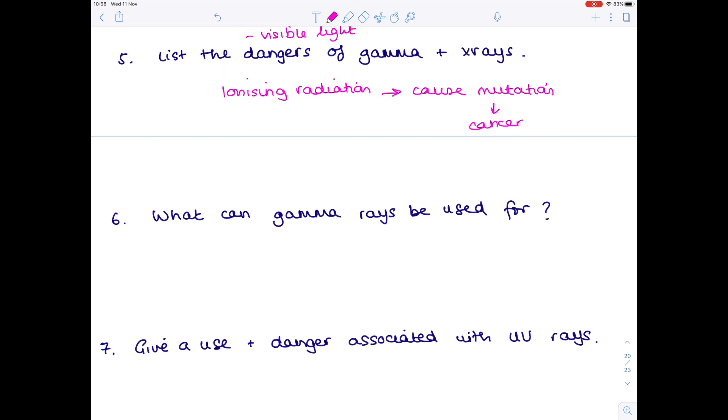What can gamma rays be used for? Weirdly, they can be used to kill cancer if used appropriately. They can also be used to sterilize surgical equipment.